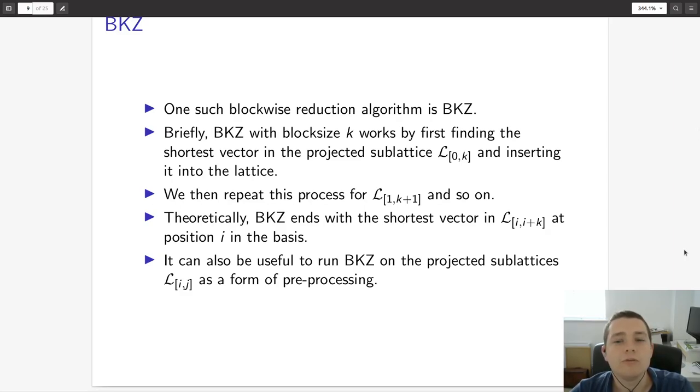One blockwise reduction algorithm that features quite a lot in the literature is BKZ. What BKZ does is divide the lattice up into blocks of size k. You first find the shortest vector over the first k elements, then you shift one along by projections and find the shortest vector in that sublattice, and you continue this process many times until you end up with a basis that looks a certain way. There are some theoretical guarantees, but you can essentially think about each block having the shortest vector in that block in the first position. It can also be useful to run BKZ on these projected sublattices recursively, but this is another trade-off that needs to be considered because pre-processing also comes with cost.